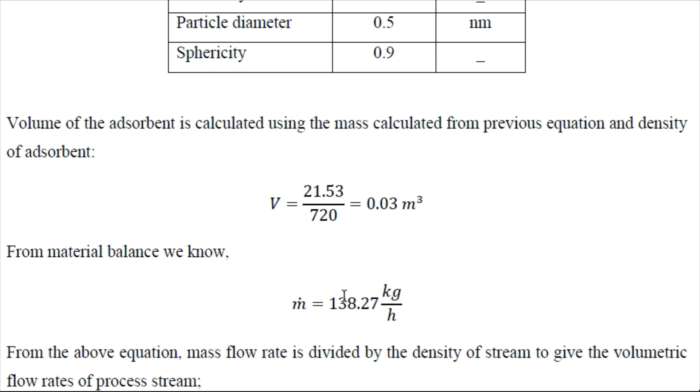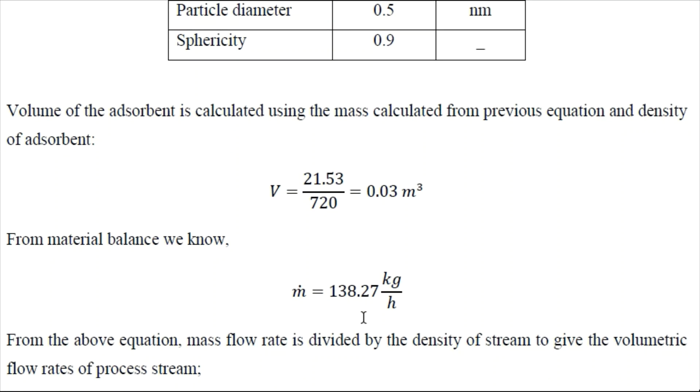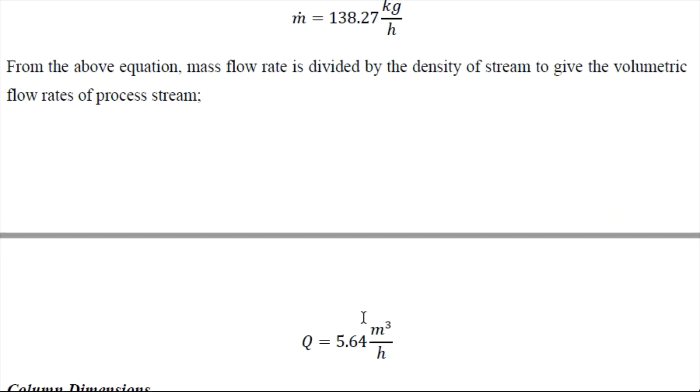So from material balance we know that process stream has flow rate of 138.27. So using the density we can convert it into volumetric flow rate.